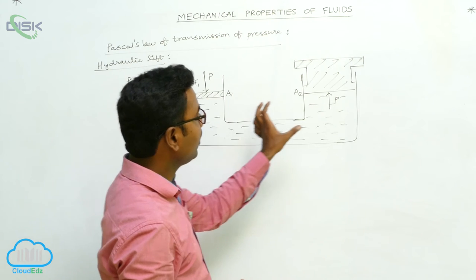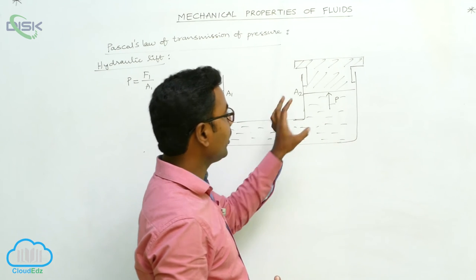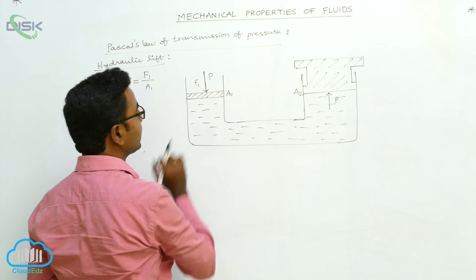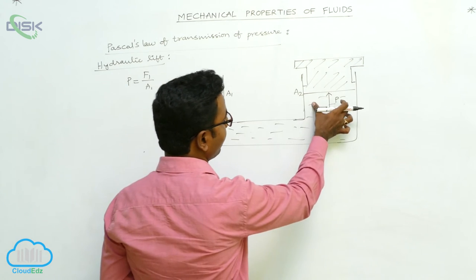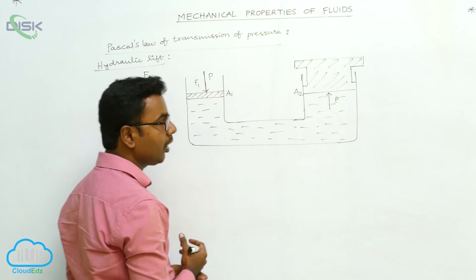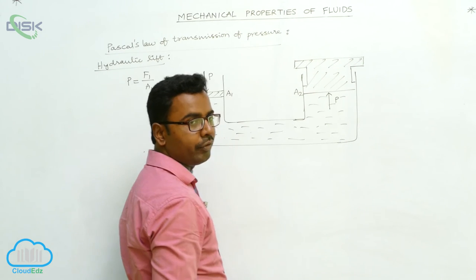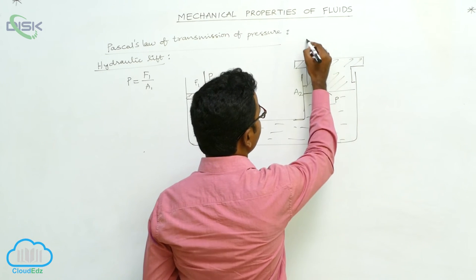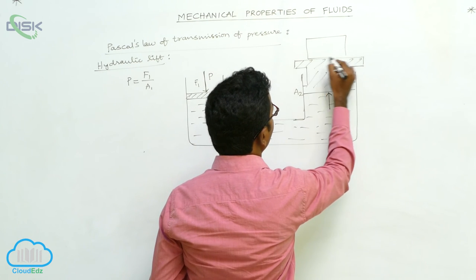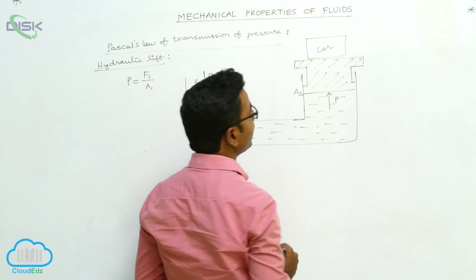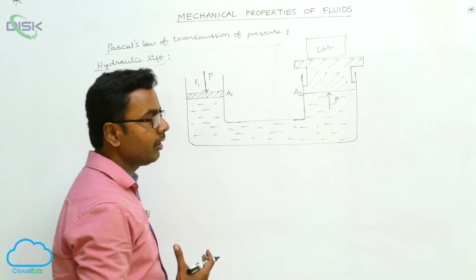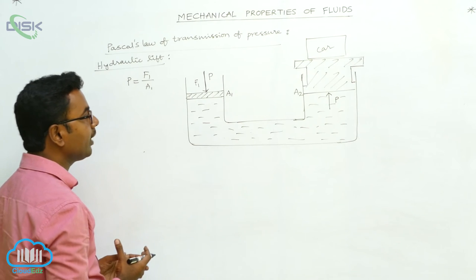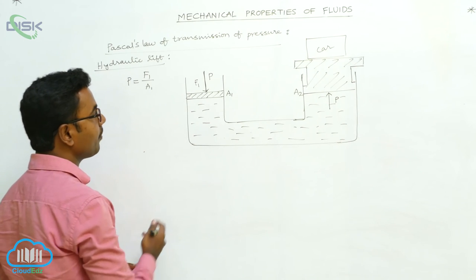The hydraulic lift contains a container with a smaller cylinder and a larger cylinder, both fitted with pistons. This cylinder has a piston of area A1, and this cylinder has a piston of area A2. The load to be lifted — for example, a car — is placed on the cylinder of larger area, and the force is applied on the cylinder of smaller area.